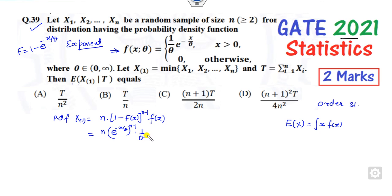the (1 - e^(-x/θ)) terms will cancel out, so you get (n/θ)e^(-nx/θ). This is the PDF. Now you can substitute this value to find the expected value.